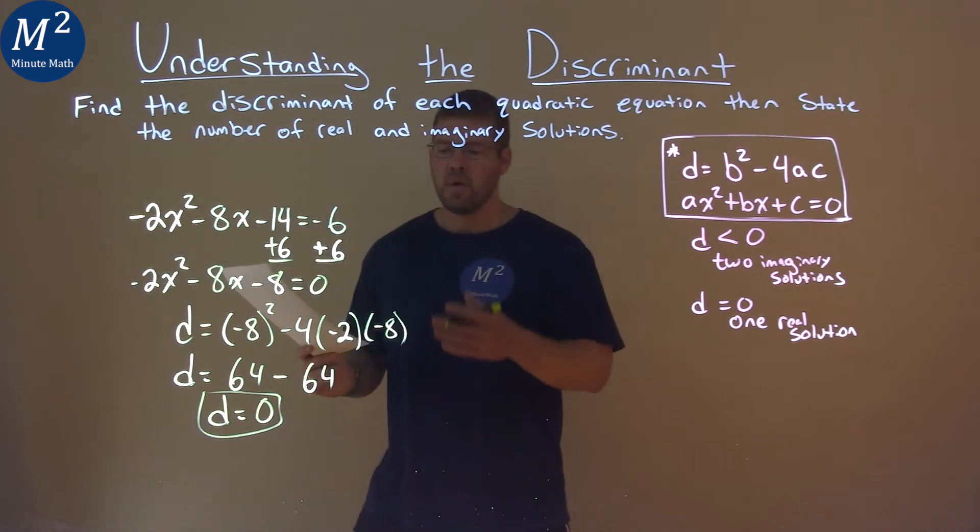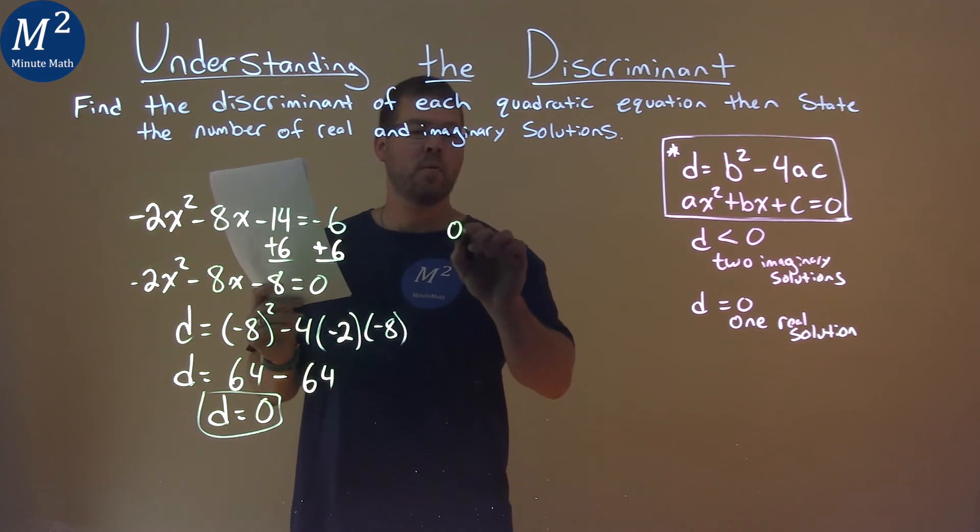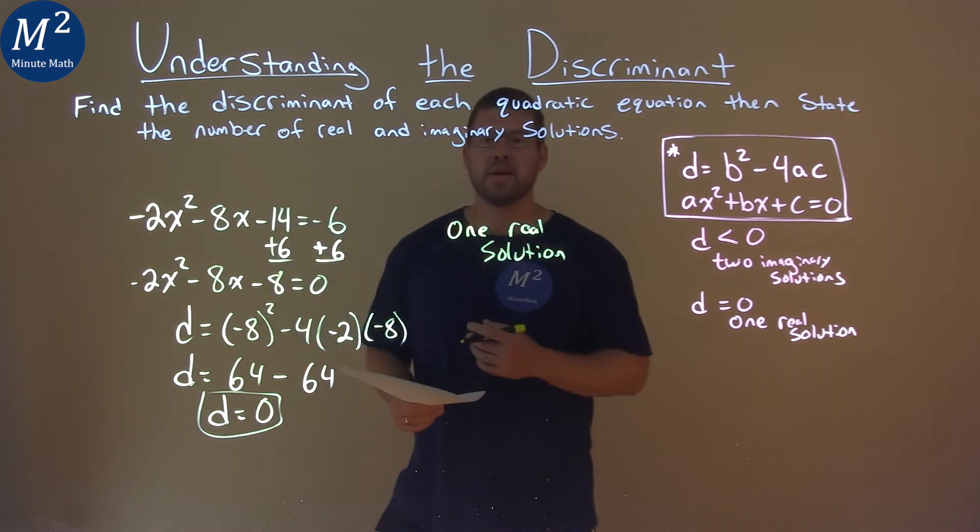What does that tell us? If our discriminant is equal to 0, which it does here, we have one real solution. And that is our final answer.